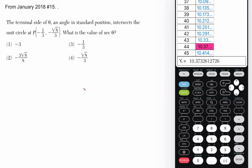Okay, so look at the language here. The terminal side of an angle theta (this symbol here is theta), in standard position, intersects the unit circle at this point. What is the value of secant of theta?